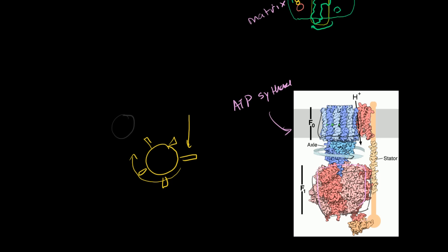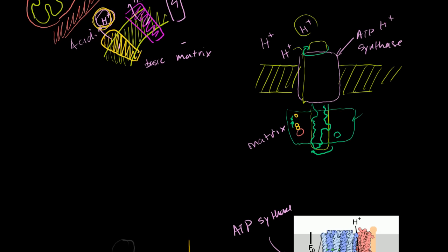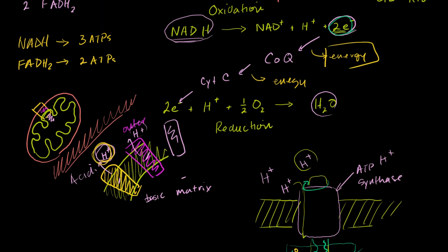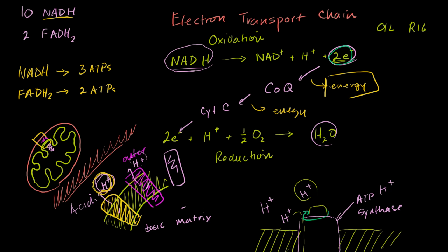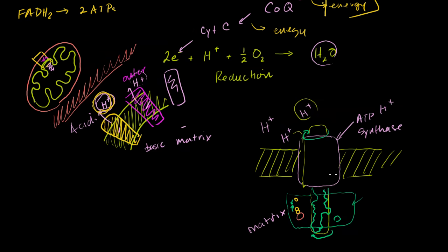People are really still trying to understand this at a deeper and deeper level. But for your purposes, especially at an introductory biology level, you just have to realize that two things are happening in the electron transport chain: electrons are moving from the NADHs and FADH2s to eventually reduce the oxygen, and as they do that, they're releasing energy as they go to lower energy states. That energy is used to pump hydrogen protons into the outer compartment of the mitochondria, and then those protons flow back in through ATP synthase, which actually produces the ATP.